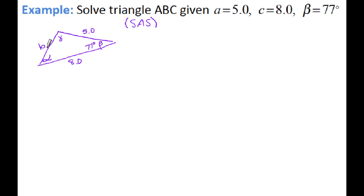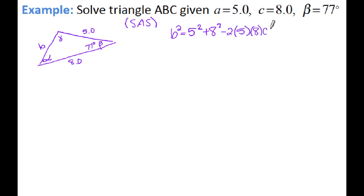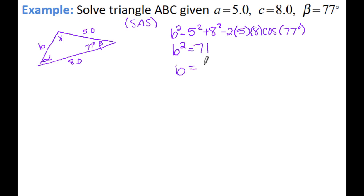For side-angle-side, you want to find your missing side first, so we're going to solve for side B. You can't use law of sines for this because you need an angle and its corresponding side, which we don't have yet — so that's an indicator to use law of cosines. I have B squared equals my other two sides squared, plus — order doesn't matter since you're adding — minus 2 times your other two sides, cosine of your angle. So: 5 squared plus 8 squared minus 2 times 5 times 8, cosine of 77. Make sure you're in degree mode. That gives me 71, and then the square root gives me 8.4.